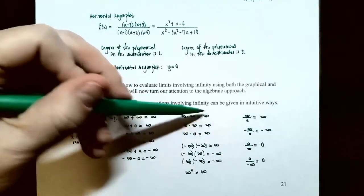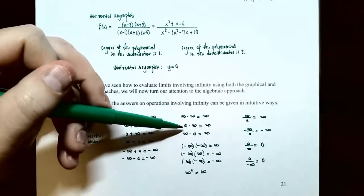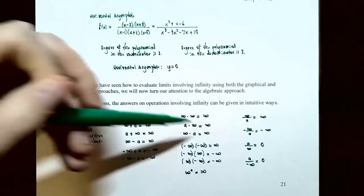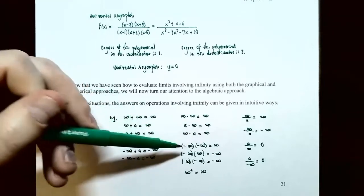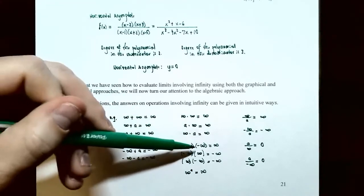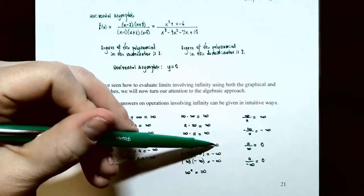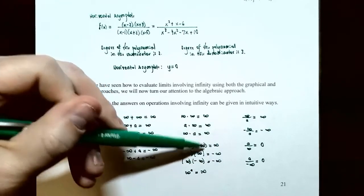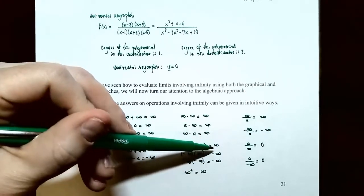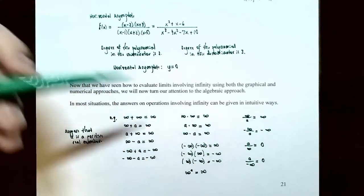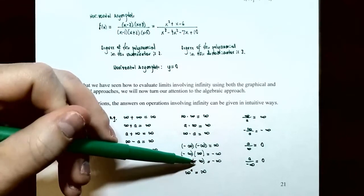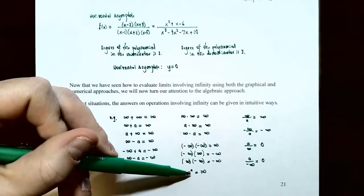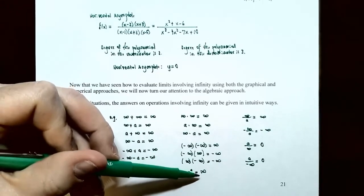Infinity times infinity is a very large number, so infinity. A positive real number times infinity is infinity. Infinity times a is infinity. Negative infinity times negative infinity is positive infinity — a very large negative number times a very large negative number gives you a positive large number. Negative infinity times infinity is negative infinity, and vice versa. And infinity raised to a positive power gives you positive infinity.